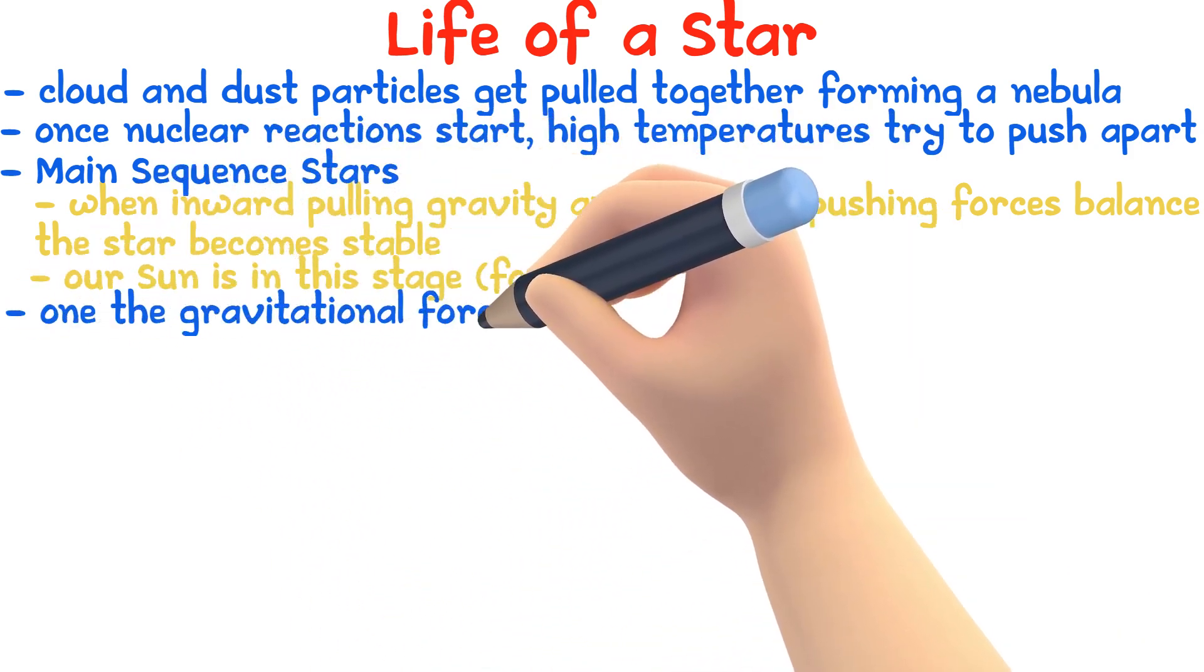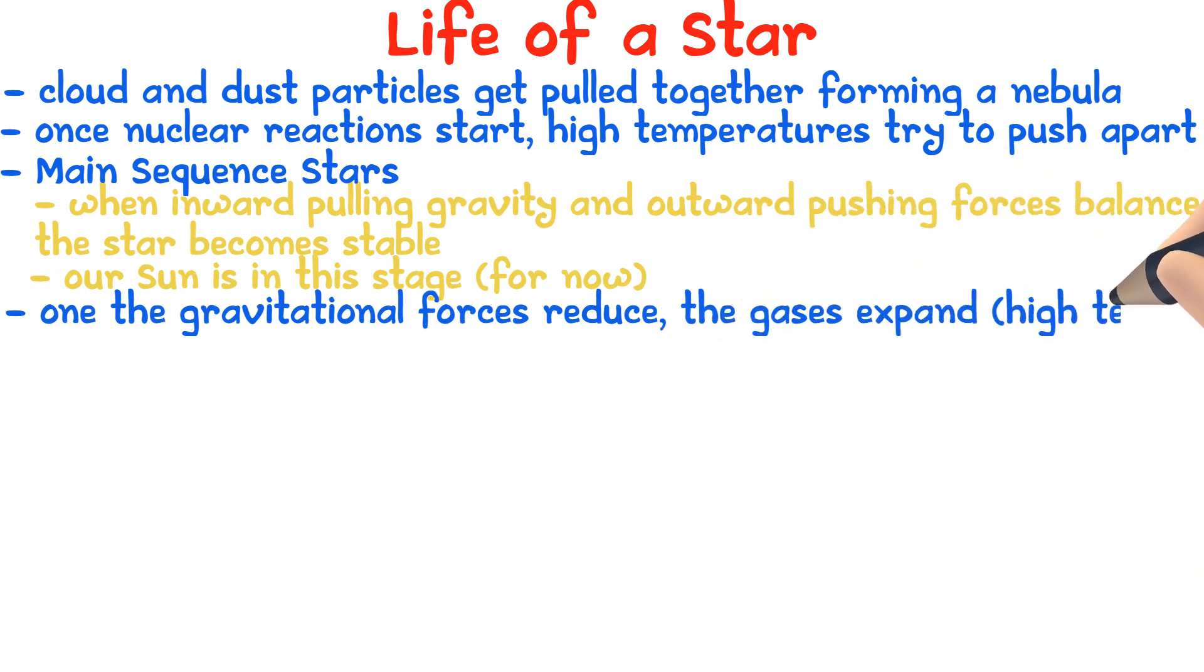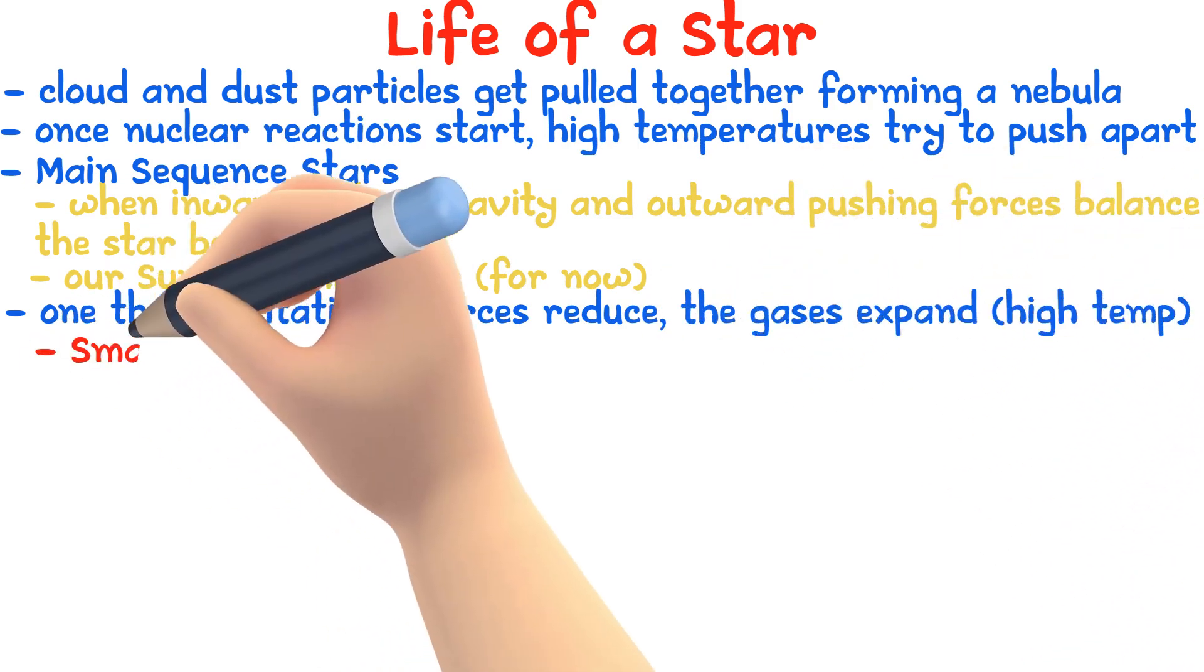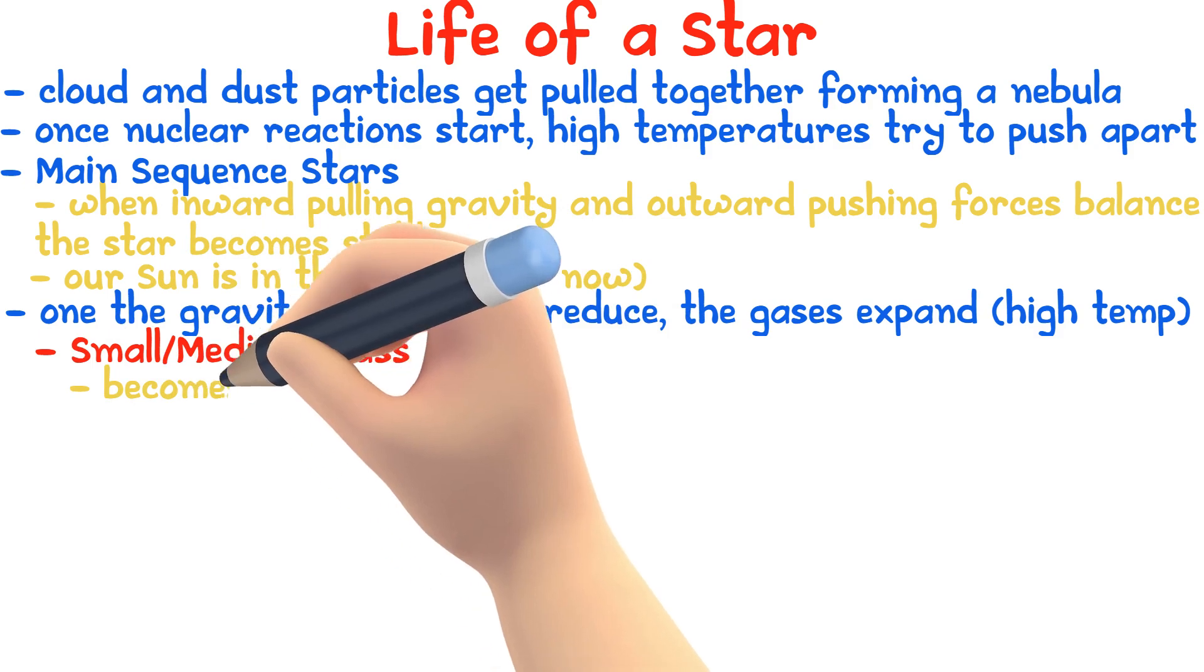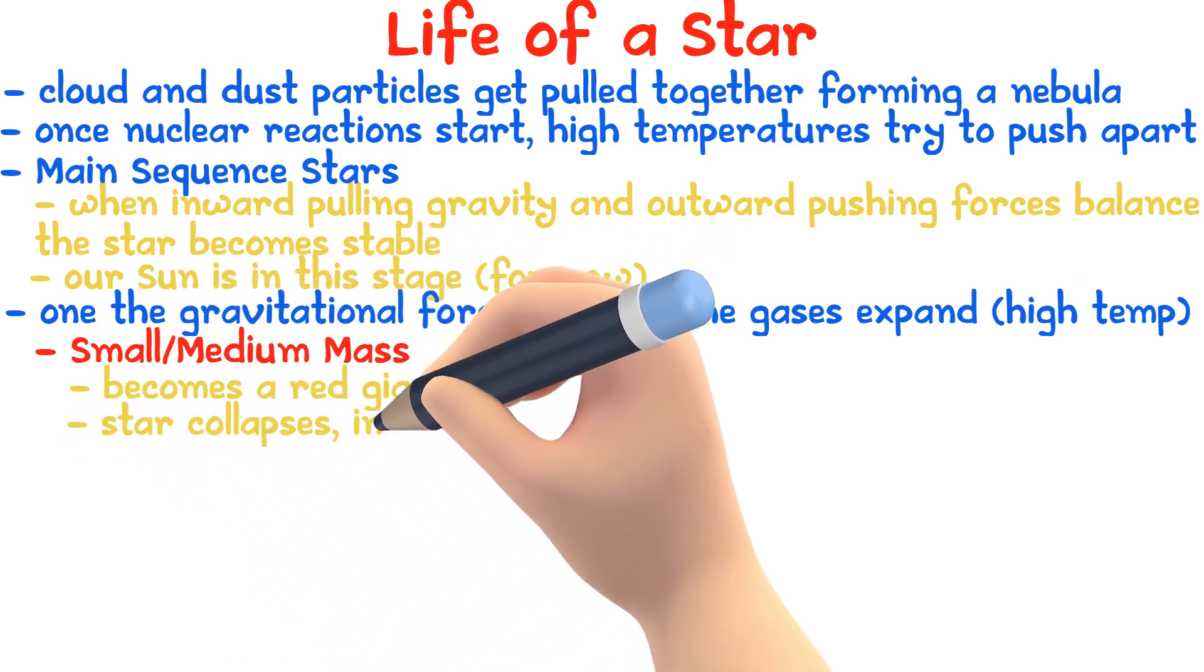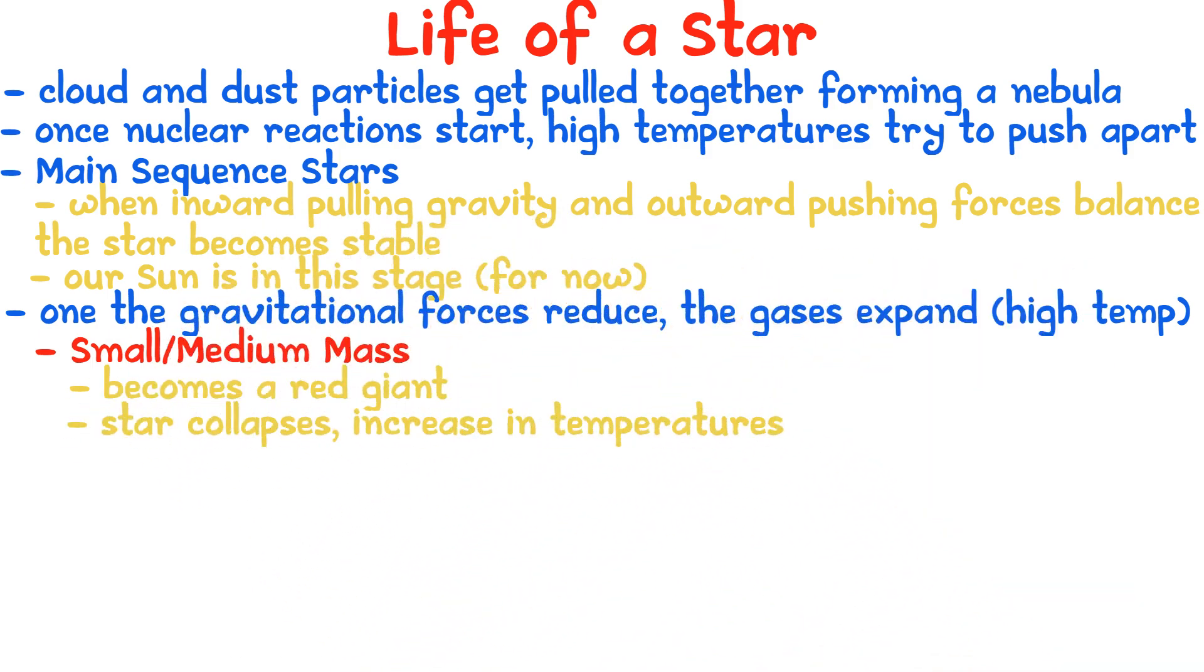Next, when the gravitational forces reduce, the gas expands. If the star has a small or medium mass, it becomes a red giant. Then the star collapses and there would be an increase in temperatures as at this stage it is a white dwarf. Then the star cools and forms a black dwarf.